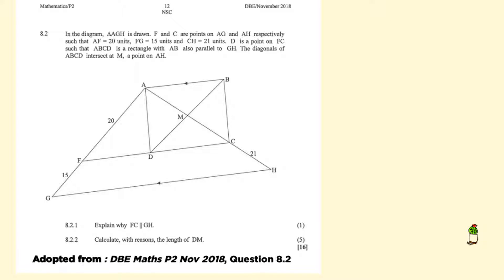Now moving on to our third example. It says that in the diagram below you have triangle AGH which is drawn. F and C are points on AG and AH respectively.